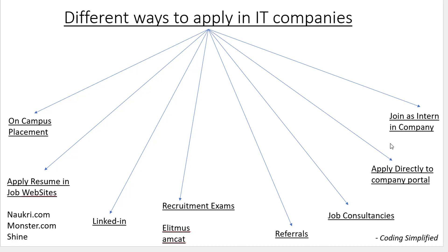To summarize: on-campus placement is suitable for third or fourth year college students. Apply your resume to job websites like Naukri, Shine, and Monster. Update your LinkedIn profile. Take recruitment exams on Elitimus and MCAT. Talk to friends working in companies for referrals. Connect with job consultancies. Apply directly to company portals — I've listed 57 company links in the description. And consider joining as an intern. These are the main ways to apply in IT or software companies.